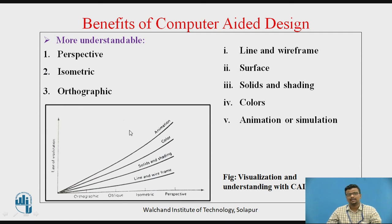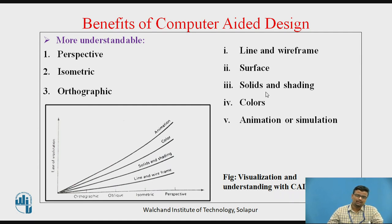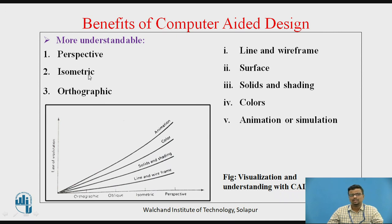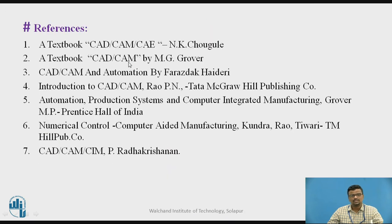For more understanding, consider the different types of geometrical modeling: wireframe modeling, surface modeling, or solid modeling. Solid modeling is better for understanding the model. Adding colors, shading, or materials with respect to simulation further aids understanding. Orthographic is a very basic view, but isometric or perspective sheets are preferred. These are the references.